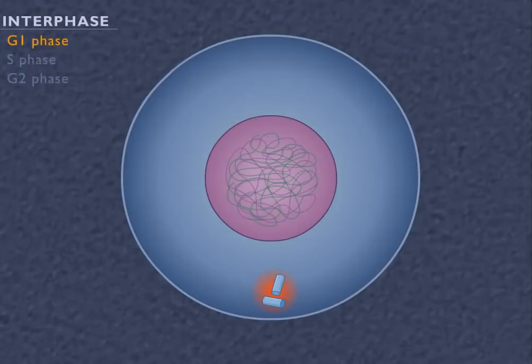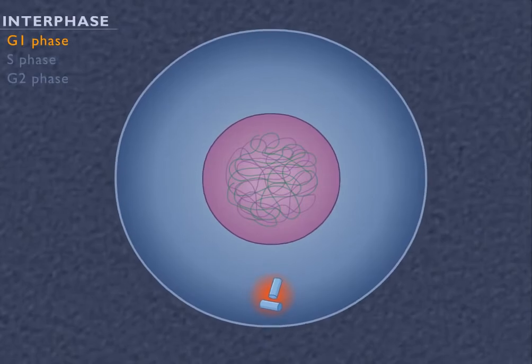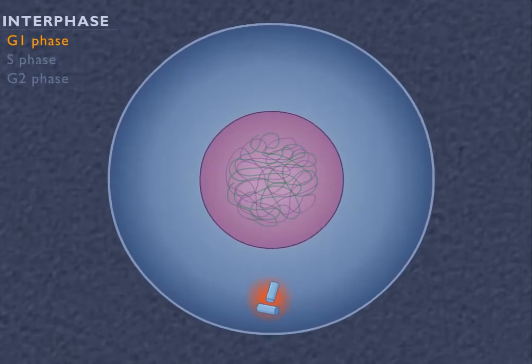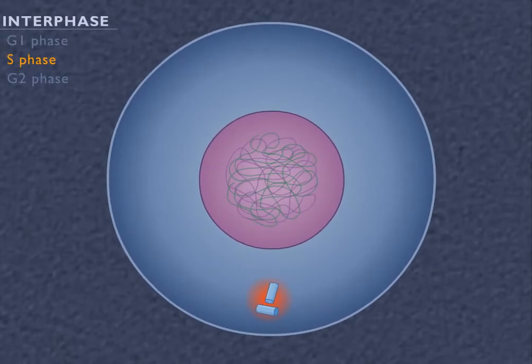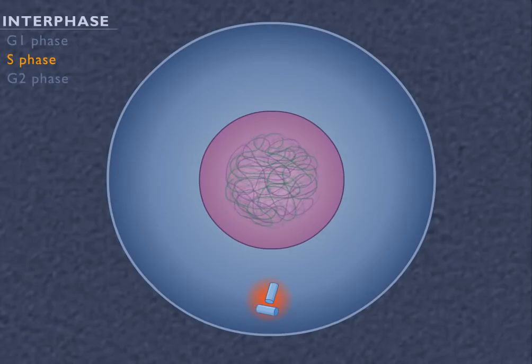During the G1, or first growth phase, normal cell functions occur as well as cell growth. In the S phase, DNA replicates, producing two copies of each chromosome.